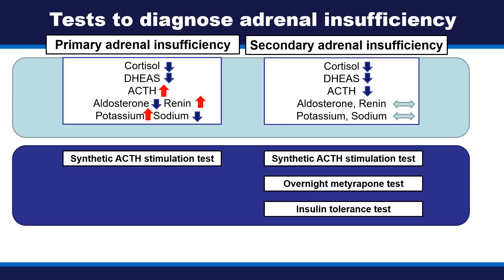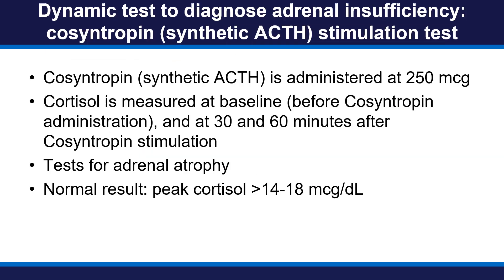Dynamic tests that can be used to diagnose secondary adrenal insufficiency include the cosyntropin stimulation test, overnight metyrapone test, and insulin tolerance test. The cosyntropin stimulation test is the most commonly used and is performed at endocrine testing centers. Cortisol is measured at baseline before cosyntropin administration, and then at 30 and 60 minutes after stimulation. This test evaluates for adrenal atrophy. A normal result is a peak cortisol above 14 to 18 micrograms per deciliter.